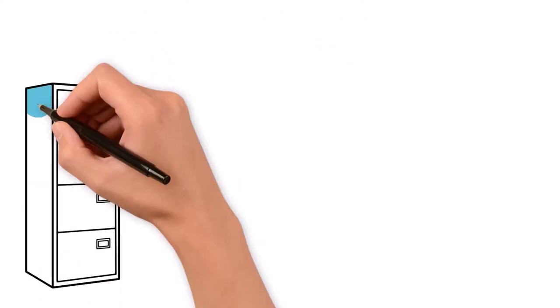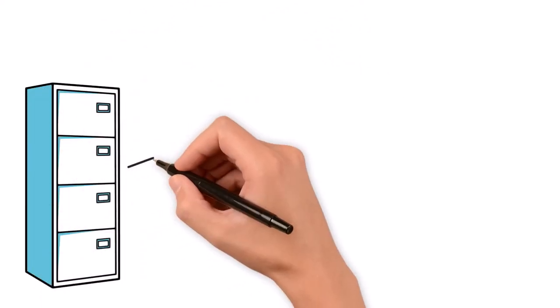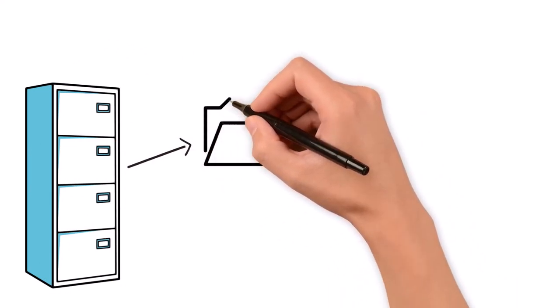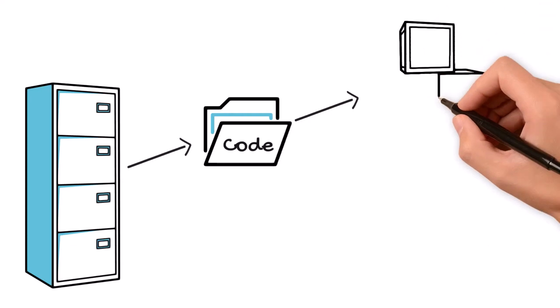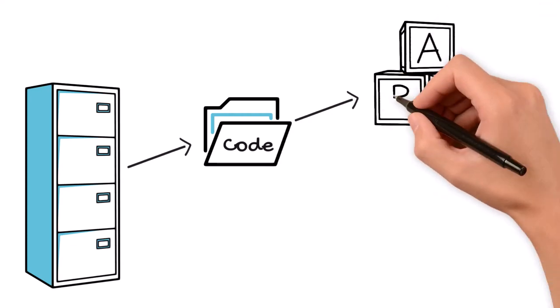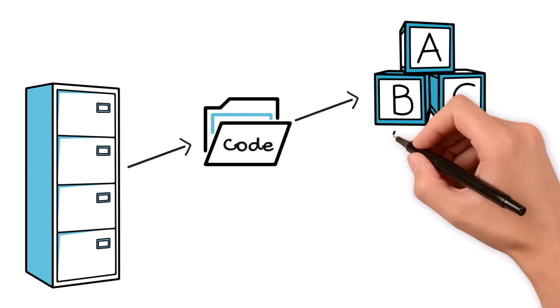An SDK is a collection of files containing code to be used within a specific PLC software environment. This code provides building blocks in the correct format that provide built-in logic. For example, how to trigger an action such as change spray recipes or collect data from external devices.